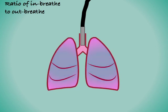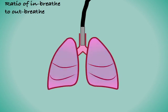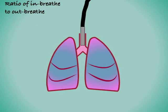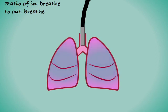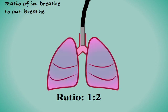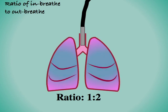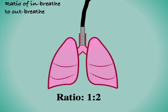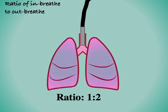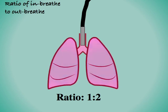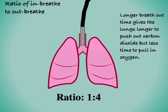The amount of time spent breathing in compared to breathing out can also be altered. Typically the ratio of in-breath to out-breath is approximately 1 to 2 — for example, breathing in for 1 second and breathing out for 2 seconds. But we can alter this depending on whether you want to put more focus on breathing in oxygen or breathing out carbon dioxide. For example, we can increase the proportion of time the patient spends breathing out, allowing them to clear more CO2.